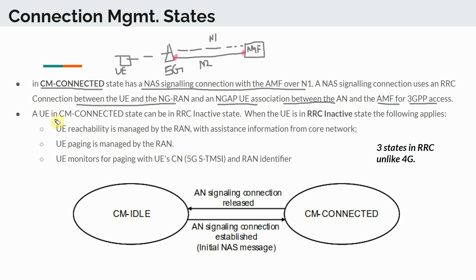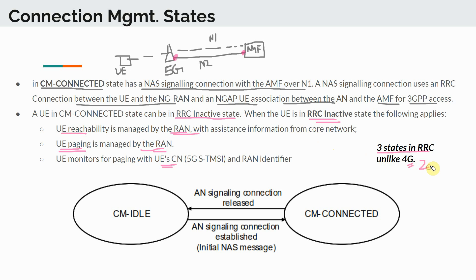A UE in CM Connected can be in an RRC Inactive state. One key difference in 5G versus 4G is that 5G introduces three RRC states instead of two. In 4G we had RRC Idle and RRC Connected. In 5G there is a third state called RRC Inactive, which sits in between the active and idle states.